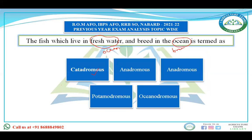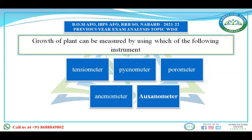Next question: growth of a plant can be measured by using which instrument — tensiometer, psychrometer, auxanometer, or anemometer? Tensiometer is used to measure soil moisture tension. Iconometer is used to measure specific gravity of soil. Porometer is used for stomatal behavior. Anemometer is used for wind velocity. The remaining option, auxanometer, is used to measure the growth of the plant. The answer is auxanometer.